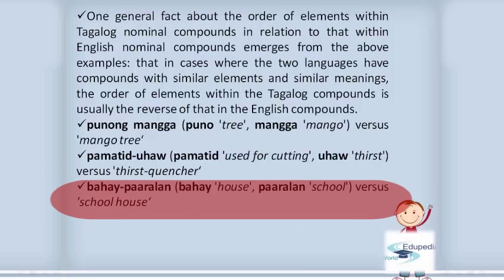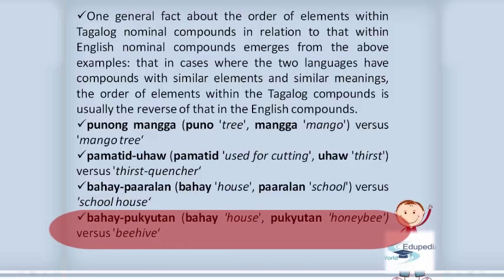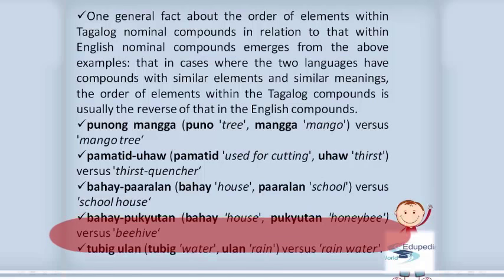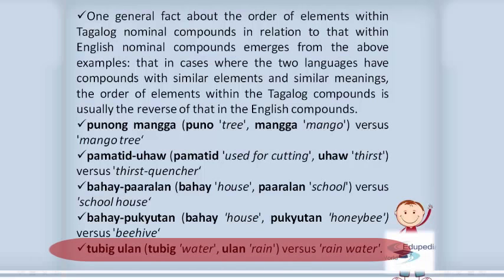Further examples of reversed order: 'bahay paaralan' (bahay = house, paaralan = school) versus English 'schoolhouse'; 'bahay pukyutan' (bahay = house, pukyutan = honeybee) versus English 'beehive'; 'tubig ulan' (tubig = water, ulan = rain) versus English 'rainwater.'